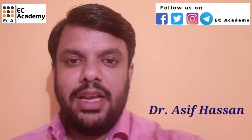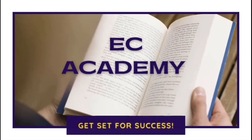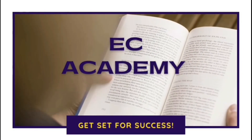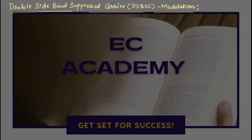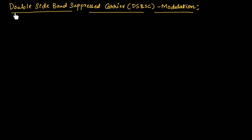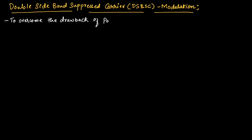Hello friends, welcome to ESA Academy. In this lecture, let us understand double sideband suppressed carrier, which is DSBSC modulation. To overcome the drawback of power wastage in AM signal, DSBSC modulation is used.